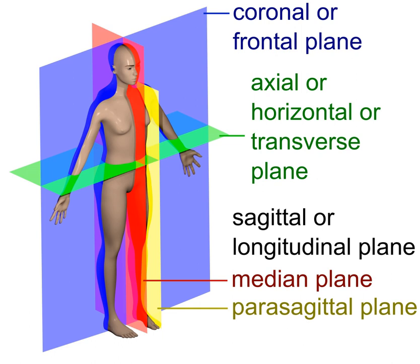The term parasagittal is used to describe any plane parallel or adjacent to the sagittal plane. Specific named parasagittal planes include the midclavicular line, which crosses through the clavicle, as well as lateral-sternal and parasternal planes.